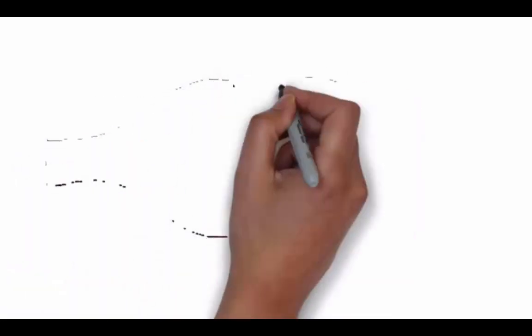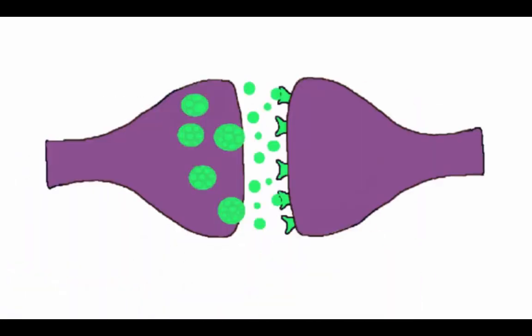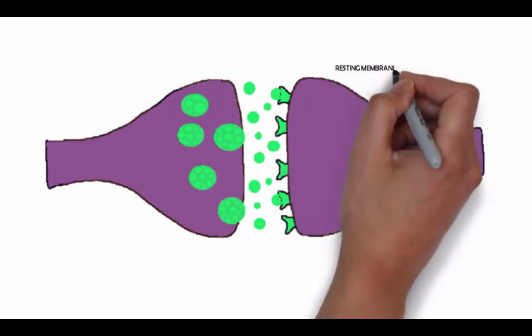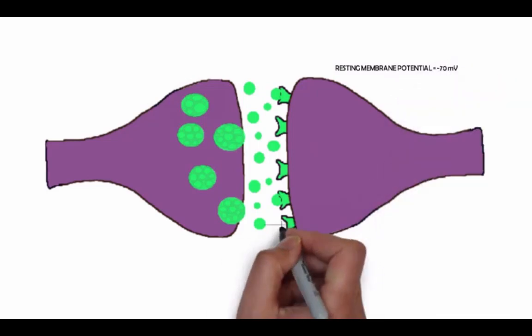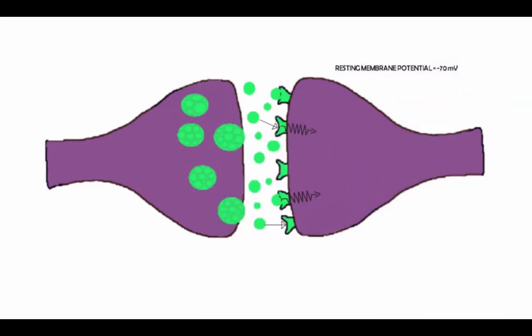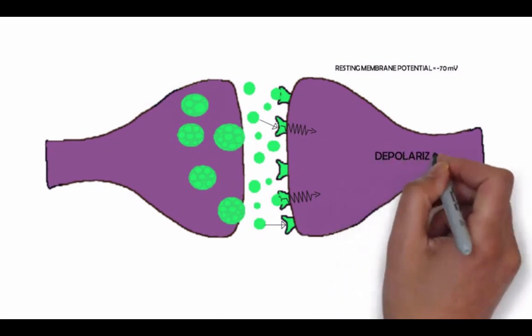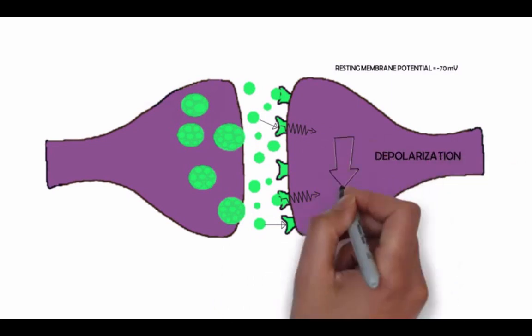The action potential is a momentary reversal of membrane potential that is the basis for electrical signaling within neurons. If you're unfamiliar with membrane potential, you may want to watch my video on membrane potential before watching this video. The resting membrane potential of a neuron is around negative 70 millivolts. When neurotransmitters bind to receptors on the dendrites of a neuron, they can have an effect on the neuron known as depolarization. This means that they make the membrane potential less polarized or cause it to move closer to zero.